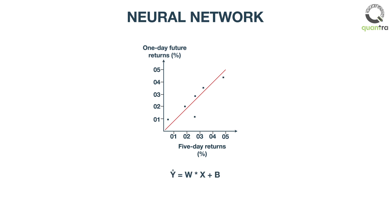This is the equation of line. Where y hat is the 1 day future returns, w is the coefficient or weight, x is the 5 day returns, and b is the intercept or bias.